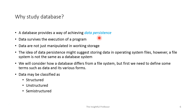Data persistence can be achieved in a couple of ways. It can be achieved using operating system files — like a spreadsheet or word processing document stored in a file. We can likewise store data about employees, departments, students, courses, and faculty this way. But there is an alternative — a database system — and that's the focus of this course. We'll draw a comparison between files and databases, looking at how they're similar and different, and what are the benefits of either mechanism for achieving data persistence.